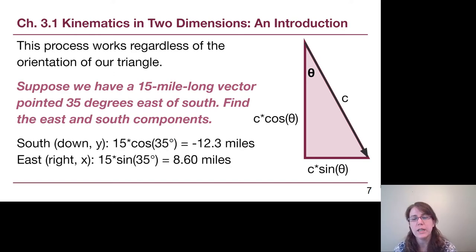Okay, so in this case the adjacent side, the next to side, the cosine side, is the vertical component. It's the y component uses cosine this time. Because it points downwards and down is our typical negative direction in the kinematics portion of our course, we are going to give it a negative sign. So it's negative 12.3 miles or 12.3 miles south. And then we go to the east and because it's far away from the angle, the opposite side, we're going to be using sine. And so 15 sine of 35 degrees is 8.6 miles.